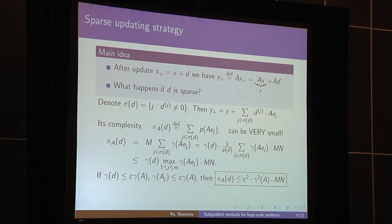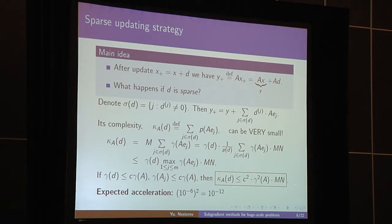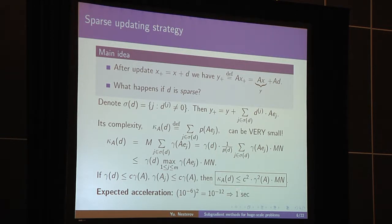Instead of acceleration by gamma, we have acceleration by gamma-squared as compared with full matrix-vector multiplication. This means that for problems of very big size, we can expect acceleration of 10 to the minus 12. And actually, this is already a lot. If you look at what it means for real time: it means that in one second, we can do operations which without this technique would need 32,000 years of computation.